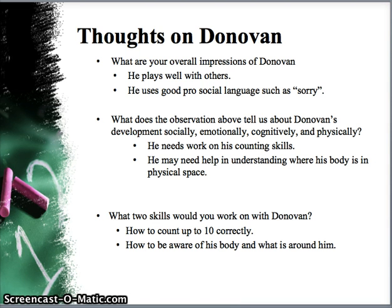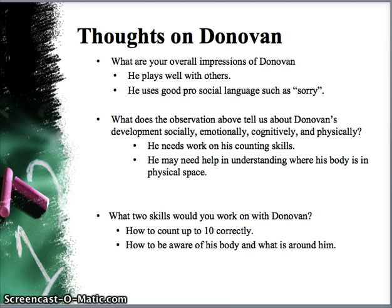I would set different skills for Donovan based on the information from this observation. I would set a goal on counting correctly up to ten, since the observation shows he's having a hard time with that. Also, because he was bumping into other children, he might need more activities to help him be aware of his body and what is around him.